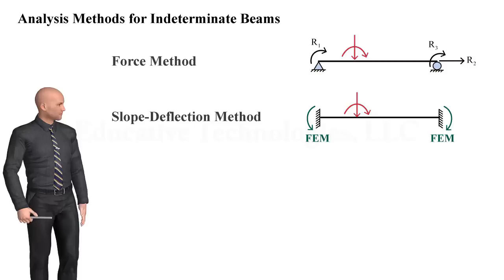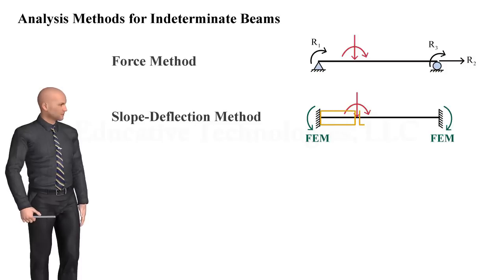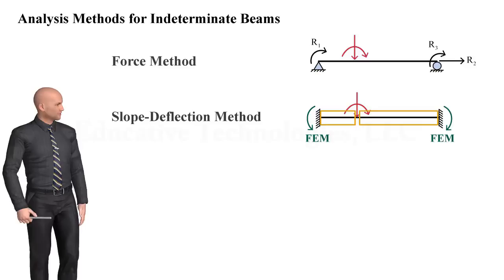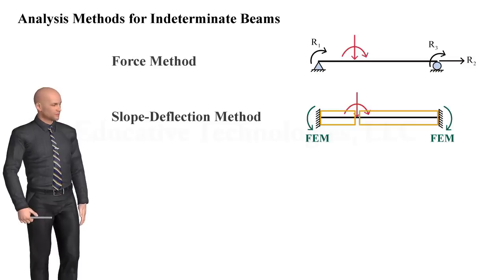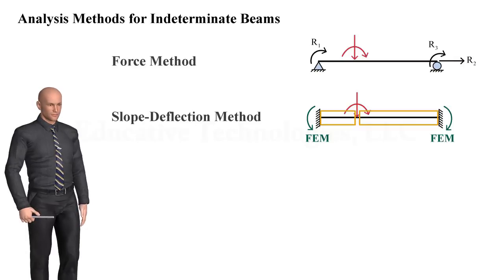we can divide the beam into two segments, so that neither segment is directly subjected to any loads. That is, the loads act on the joint that connects the two members, instead of acting on a member. This way, the fixed-end moments for each member become zero, making the slope-deflection method a viable option for solving the problem.